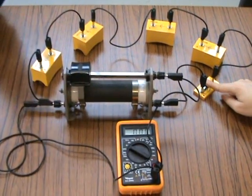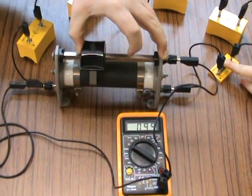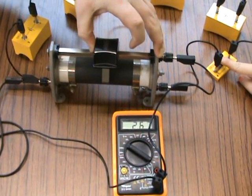The switch is closed. By moving the sliding contact, we vary the voltage.